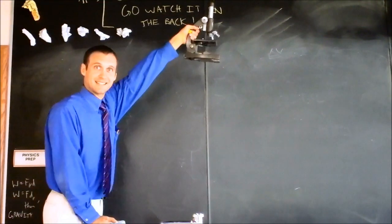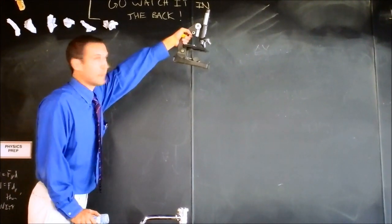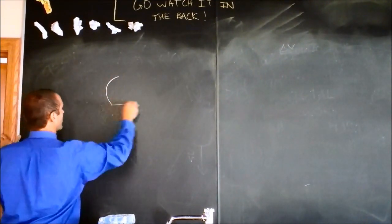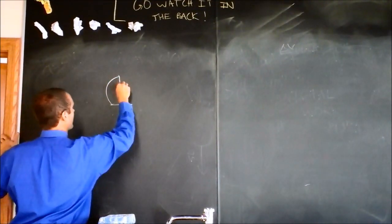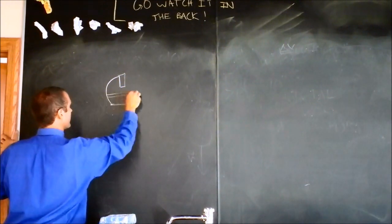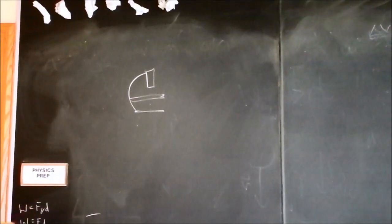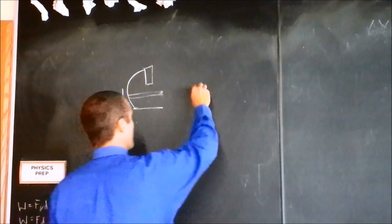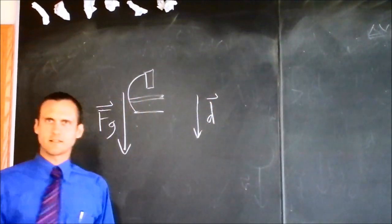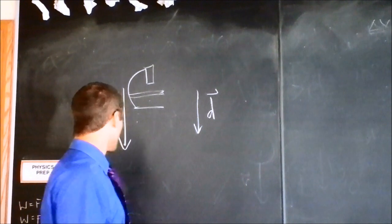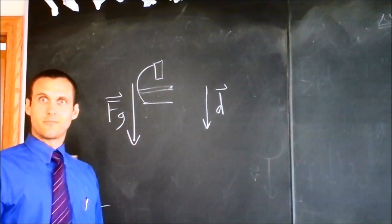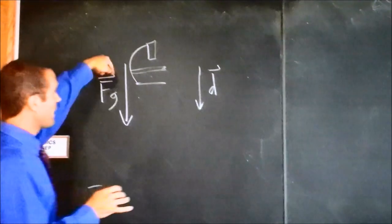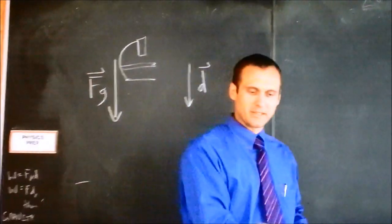For the next experiment, I'd like to consider a falling microscope. You climb up on top of a ladder and you drop a microscope. You drop the microscope and the microscope falls under the action of gravity. Gravity points down and the microscope is going downward. So is gravity doing positive work or negative work on the microscope? Positive work. Because it's going in the direction of the microscope. Since gravity is doing positive work on the microscope, we know the microscope is speeding up.